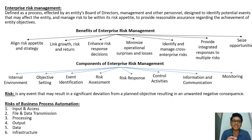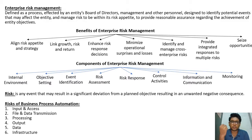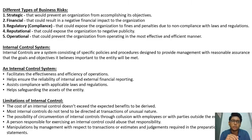Risk is an event that may result in a significant deviation from a planned objective, resulting in an unwanted negative consequence — risk may even lead to a loss. The risks of BPA are divided into six categories: input and access, file and data transmission, processing, output, data, and infrastructure.